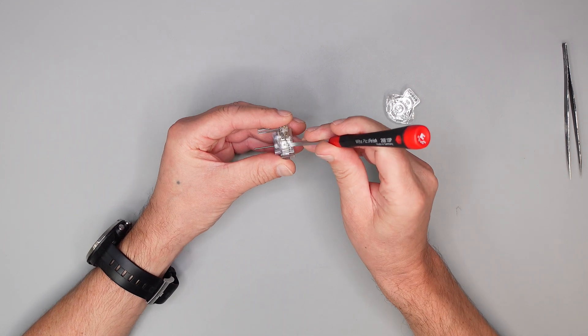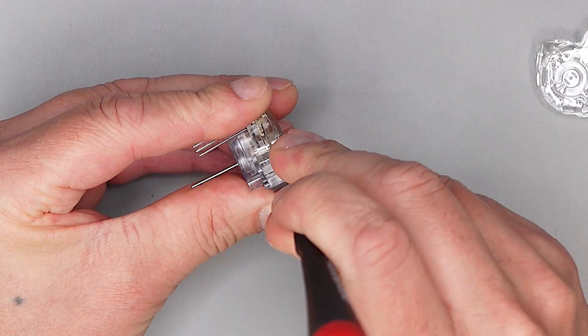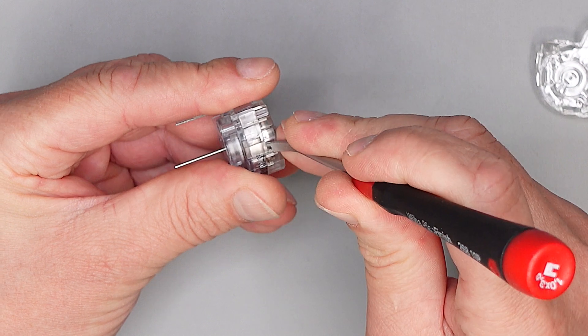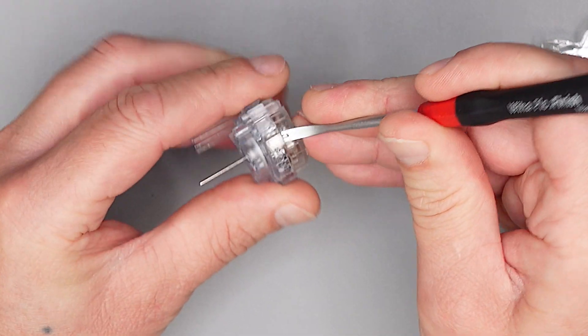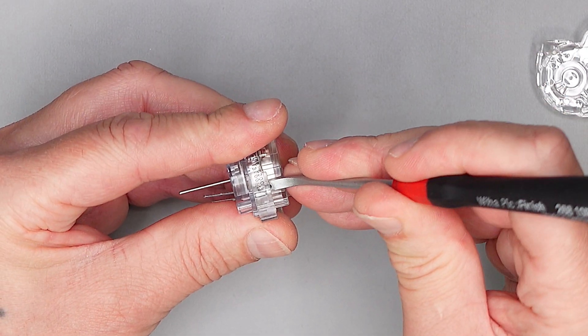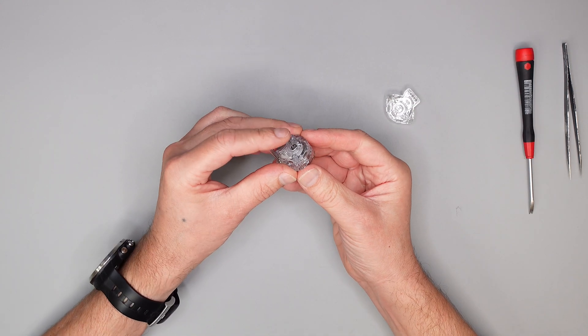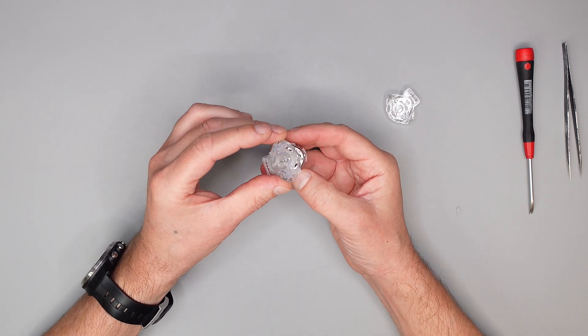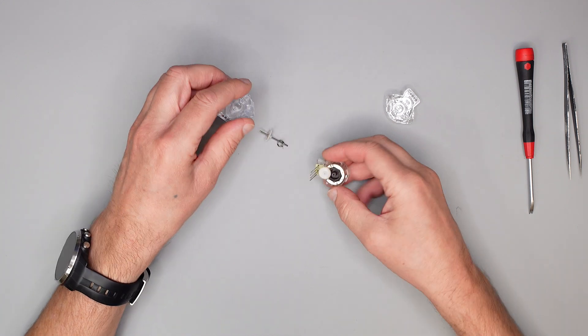Wir müssen die Kappe lösen, die ist auch nur drauf geklebt. Dann gehen wir mit meinem Lieblings-Tool hier drunter, hebeln das ein wenig auf. Hier drauf drücken, dann hat man die obere Kappe ab.